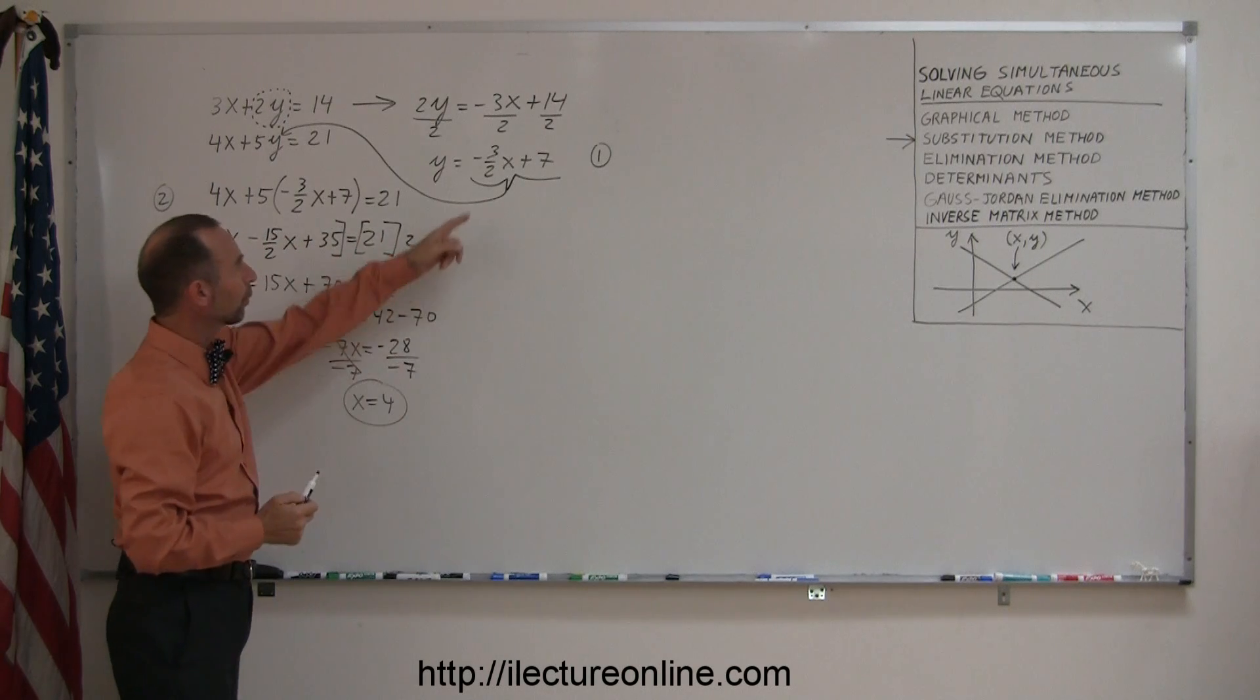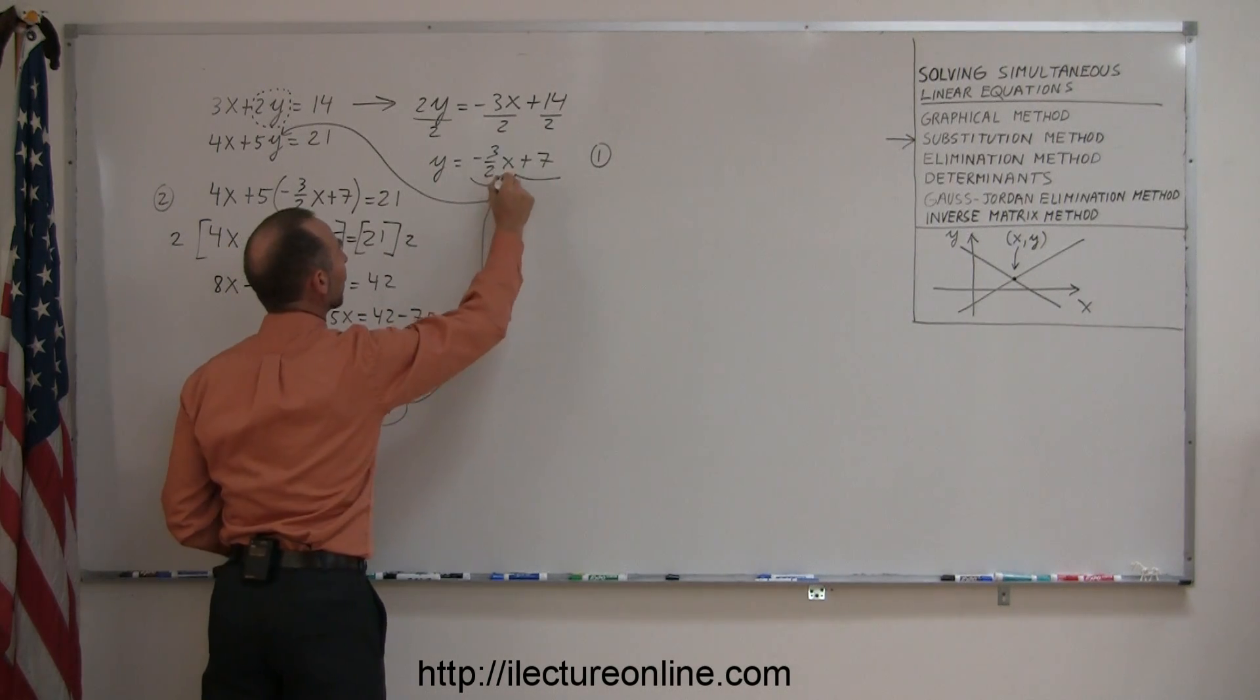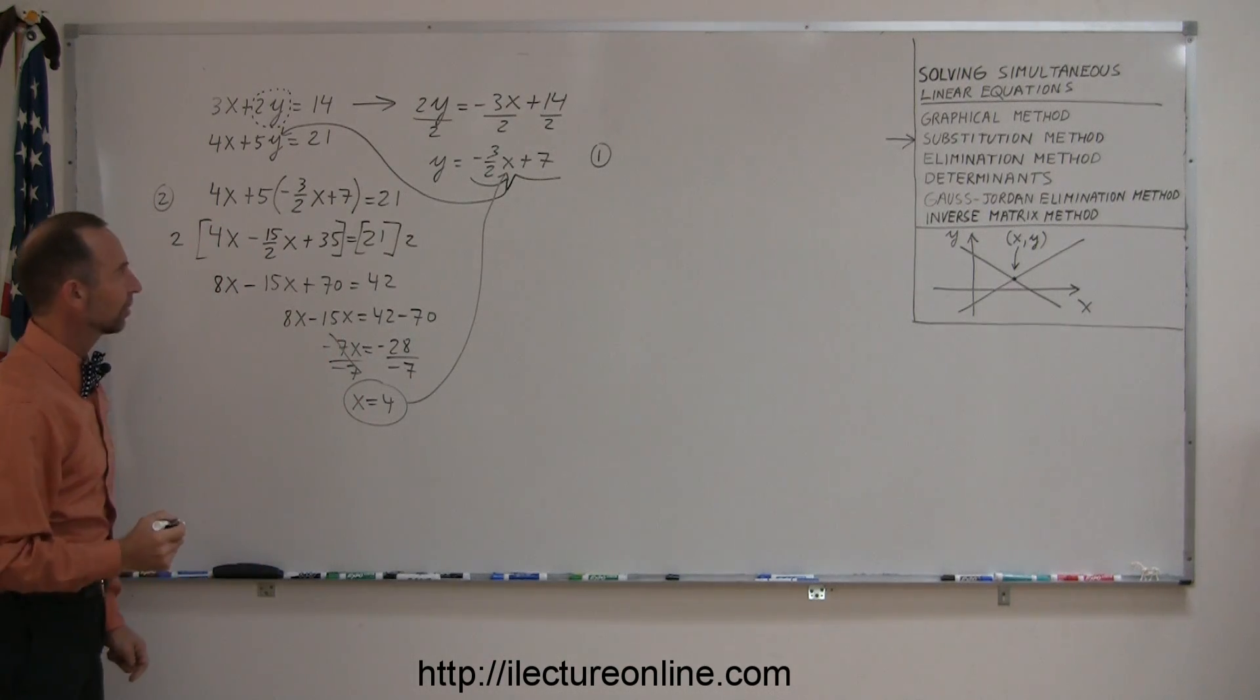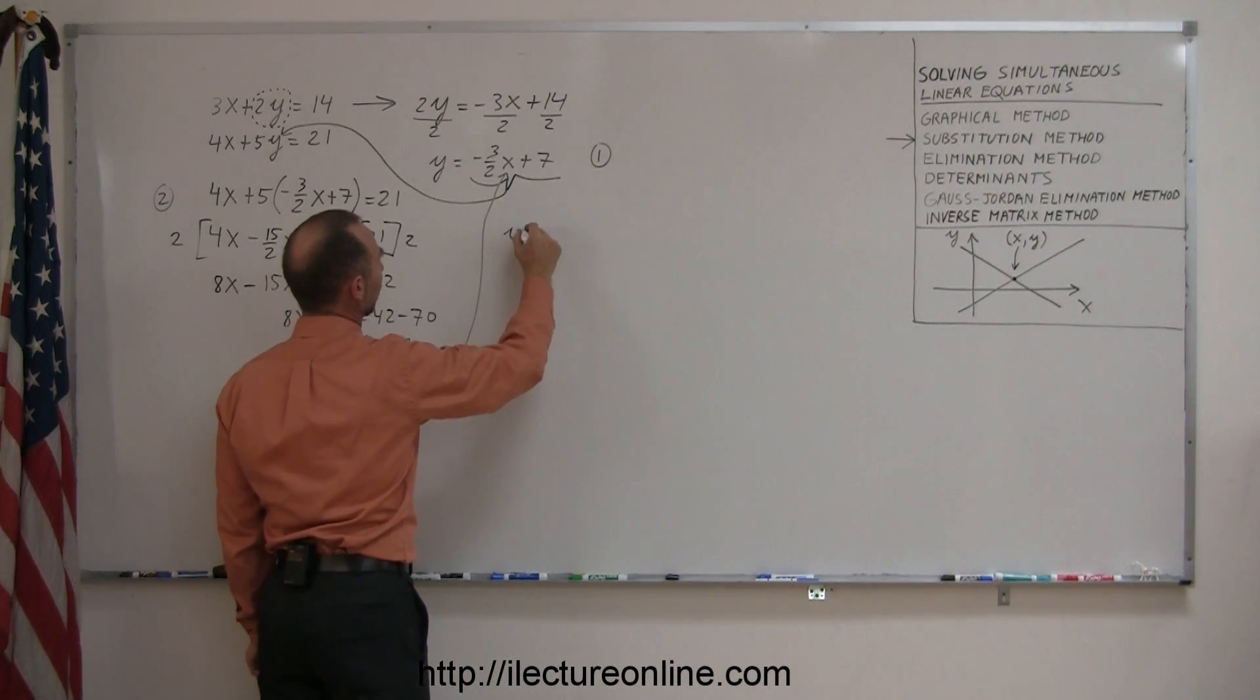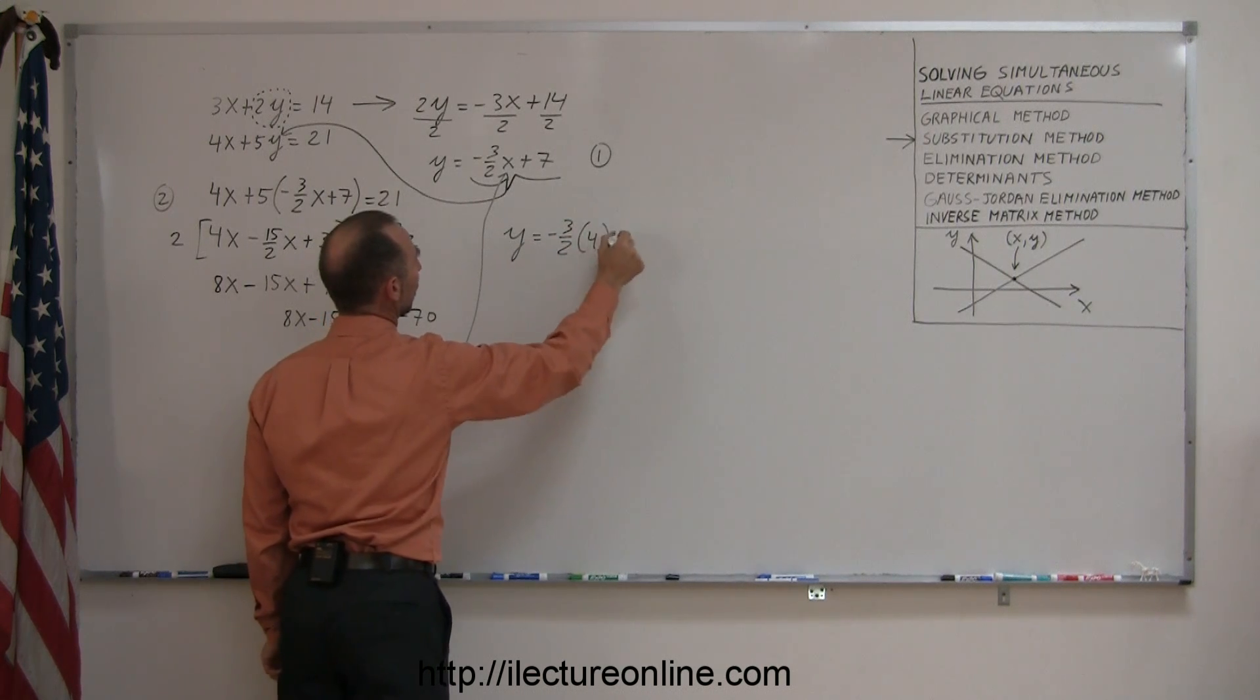So now I want to find the y-coordinate, and I can do that by plugging this 4 back into this equation right here. And so this equation now becomes y equals minus 3 over 2 times 4 plus 7.